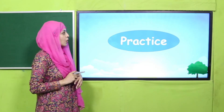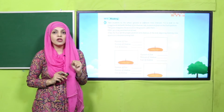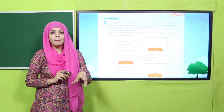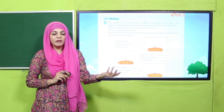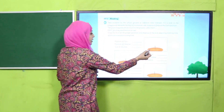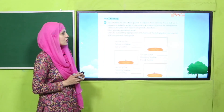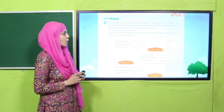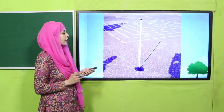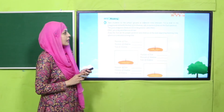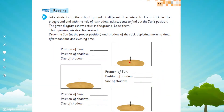Let's quickly move towards the practice. You have to open page number eleven. You have to do this practical by going into the ground - I showed you the practice on the classroom table. You have to insert a stick in the ground, and at different times of the day draw its shadow, tell its direction, and tell the time. Take students to the school ground at different time intervals, fix a stick in the playground, and ask students to find out the sun's position. The given diagram shows a stick in the ground - draw the sun at the proper position and shadow of the stick depicting morning time, afternoon time, and evening time.